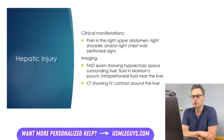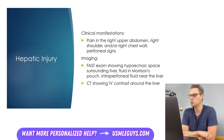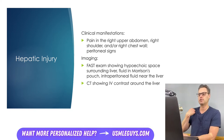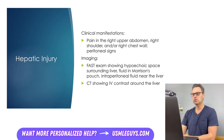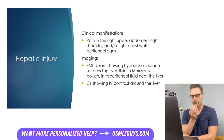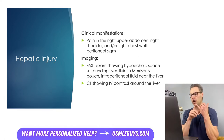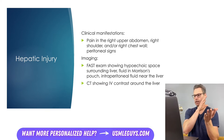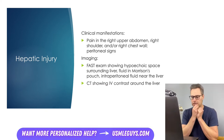Hepatic injury also often results from blunt or penetrating trauma, and patients will often present with right upper abdominal pain, right shoulder pain, and/or right chest wall pain. Blood can cause diaphragmatic irritation, which is what causes that referred pain to the right shoulder. Patients may also have peritoneal signs, and on FAST exam, signs of liver injury are similar to the signs of splenic injury, only now it is the liver with the abnormalities.